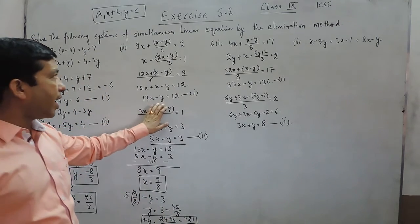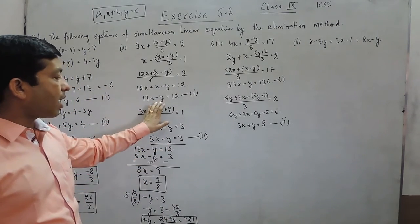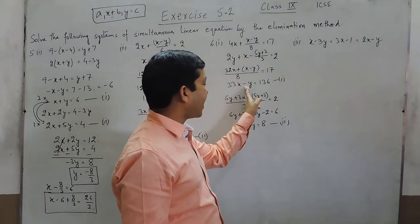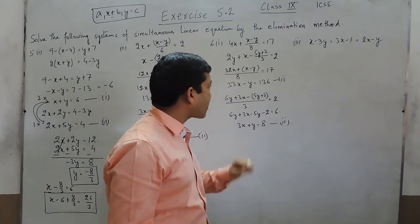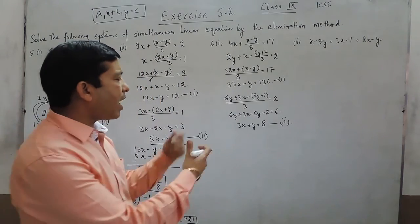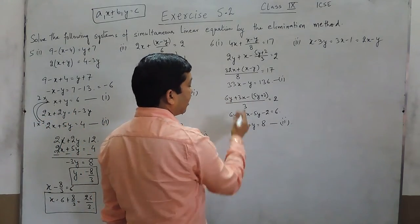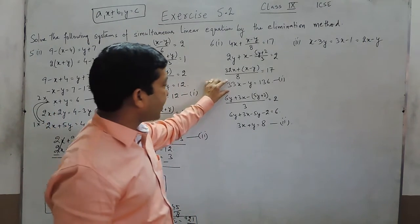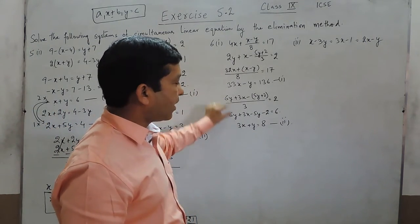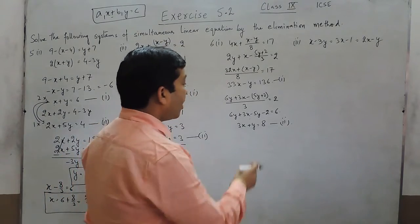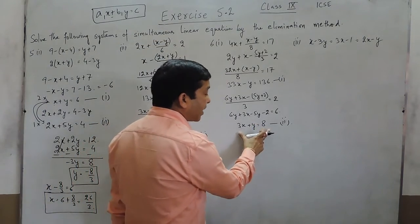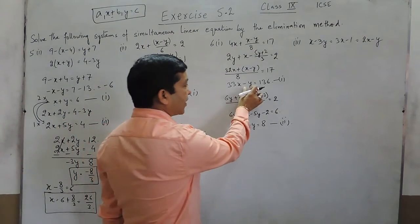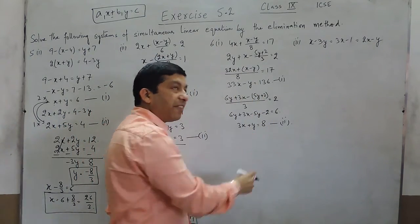Here the coefficient of y in the first equation is minus 1 and in the second equation is plus 1. So we have various methods: we can either multiply the second equation by 11 so that the coefficient of x becomes equal and then subtract them, or we can multiply the first equation by minus 1 so that the coefficient of y becomes equal and then subtract.